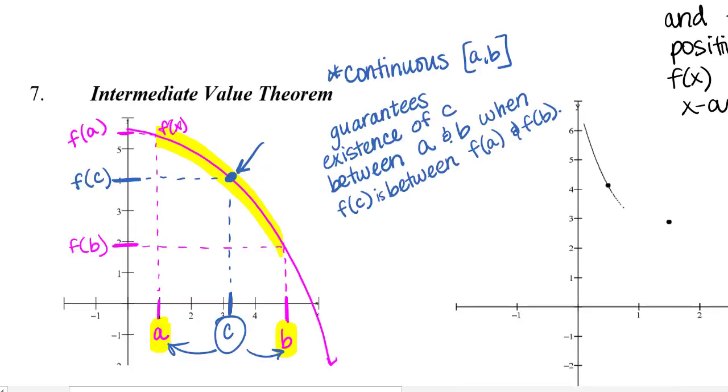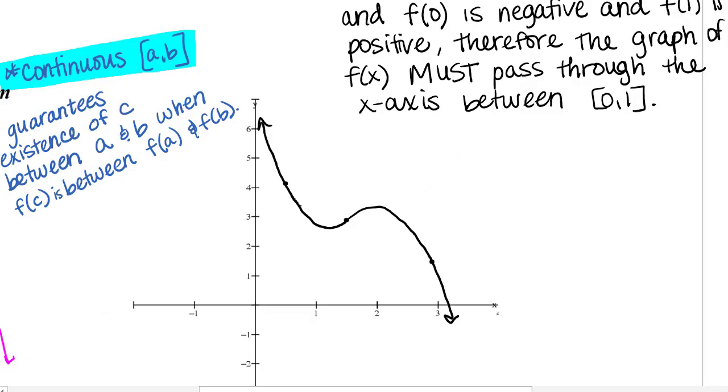All right? So, again, the biggest piece of this is that you are continuous. So, if you are continuous on that interval from a to b, then this intermediate value theorem is going to guarantee the existence of that x value, so we'll call it c for generalizing, between your values of a and b when your f of c is between your f of a and f of b, like we talked about in the beginning.